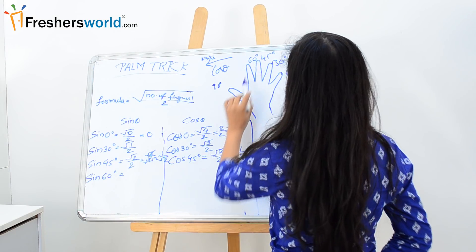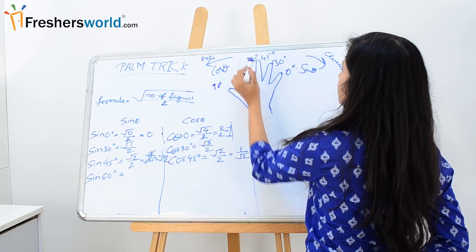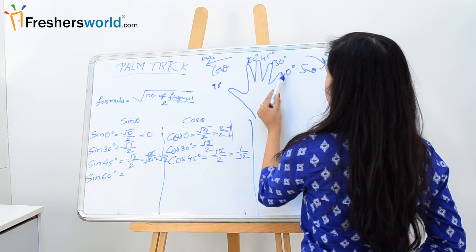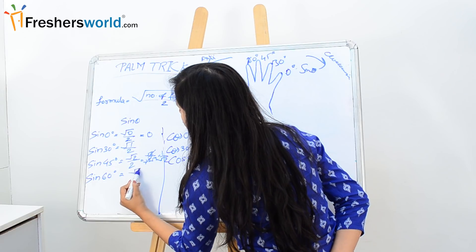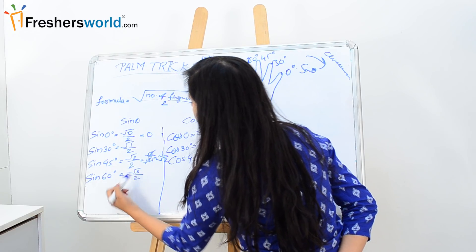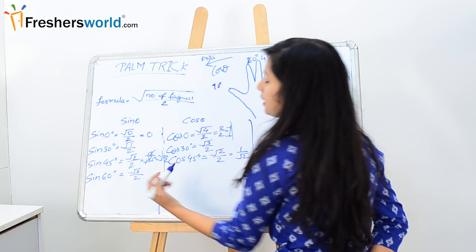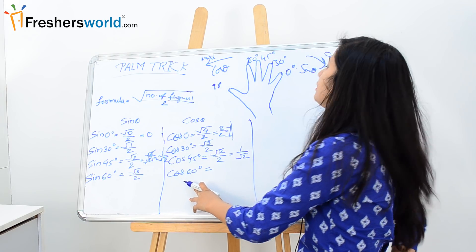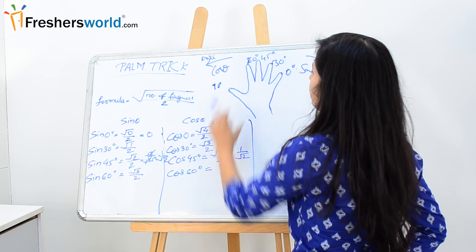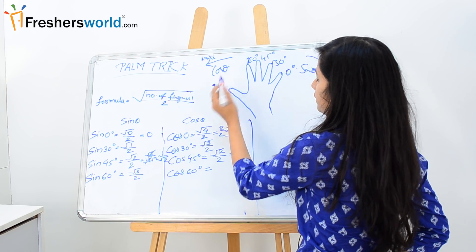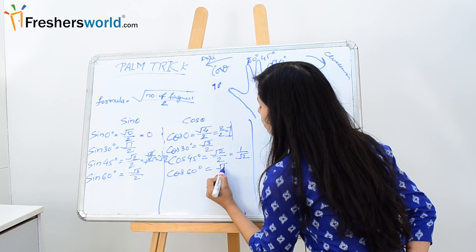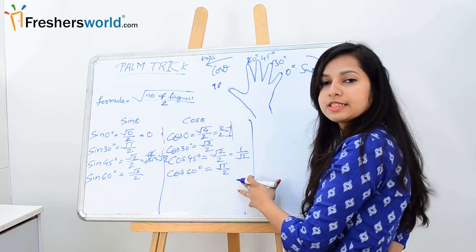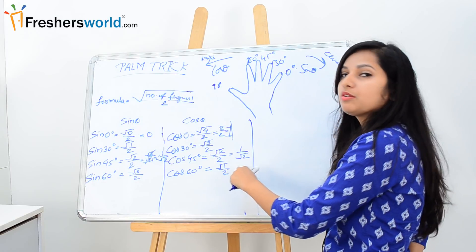Sin 60 degree. Here is our sin 60. Number of fingers: 1, 2, and 3. Root over of 3 by 2. The value of sin 60 is root over of 3 by 2. Similarly for cos 60 degree, we will be moving anti-clockwise. The number of fingers is 1, that means root over of 1 by 2. So the value of cos 60 is root over of 1 by 2.